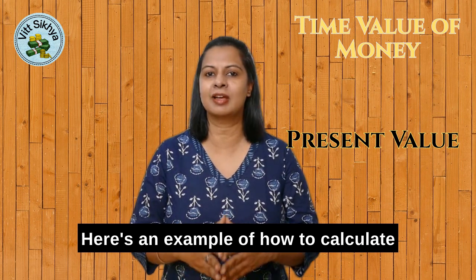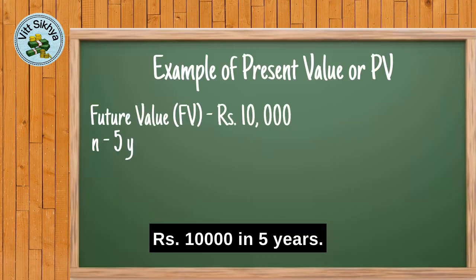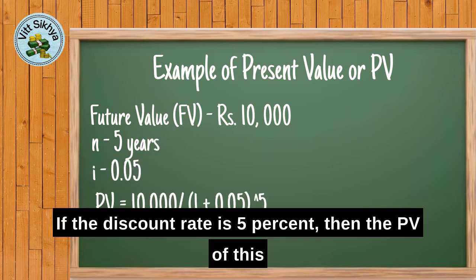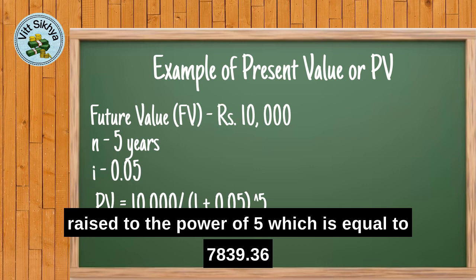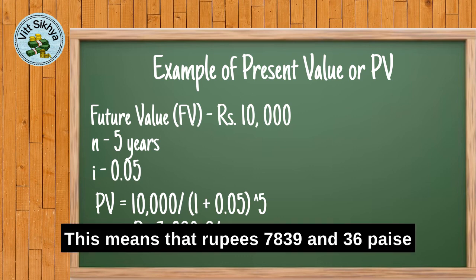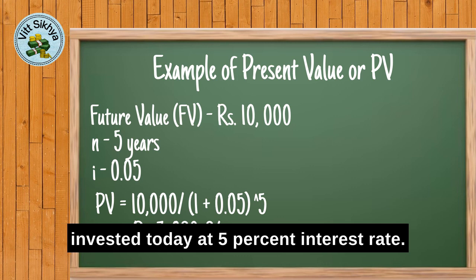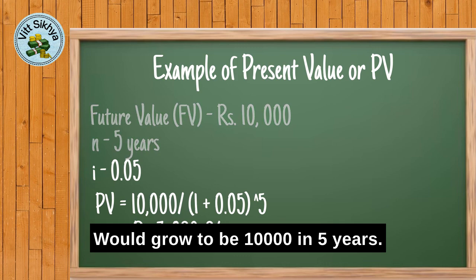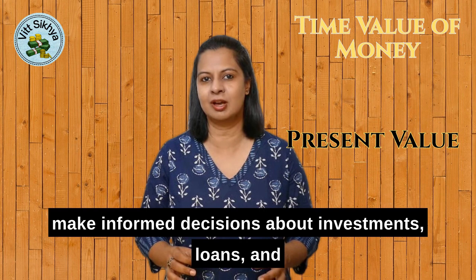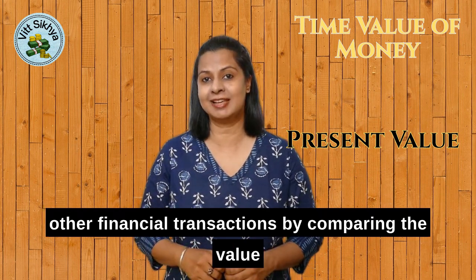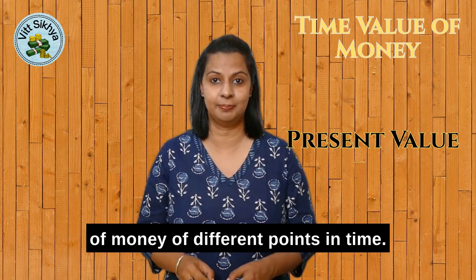Here's an example of how to calculate the PV of a future cash flow. Suppose you expect to receive Rs. 10,000 in 5 years. If the discount rate is 5%, then the PV equals Rs. 10,000 / (1 + 0.05)^5, which equals Rs. 7,839.36. This means that Rs. 7,839 invested today at a 5% interest rate would grow to Rs. 10,000 in 5 years. Present value calculations are essential in finance as they allow individuals and businesses to make informed decisions about investments, loans, and other financial transactions by comparing the value of money at different points in time.